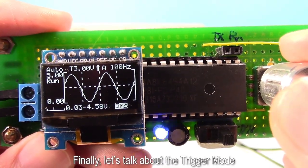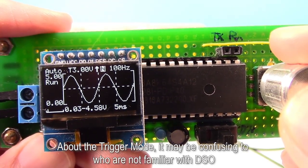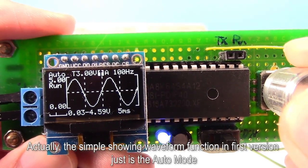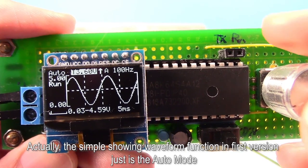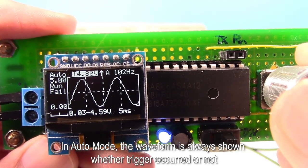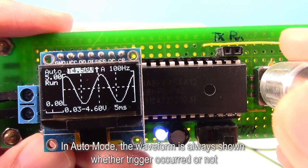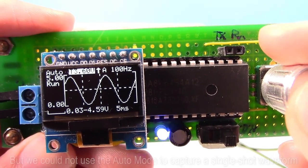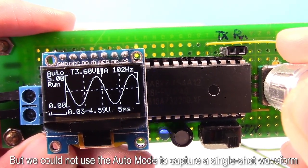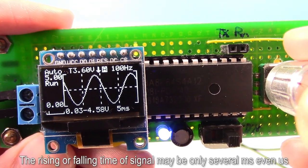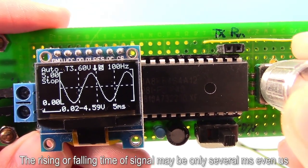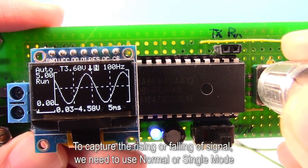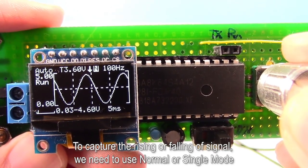Finally, let's talk about the trigger mode. About the trigger mode, it may be confusing to those who are not familiar with DSO. Actually, the symbol showing waveform function in first version just is the auto mode. In auto mode, the waveform is always showing whether trigger occurred or not. Using auto mode to observe the repetitive signal is no problem. But we could not use the auto mode to capture a single shot waveform. The rising or falling time of signal may be only several milliseconds, even microseconds. To capture the rising or falling of signal, we need to use normal or single mode.